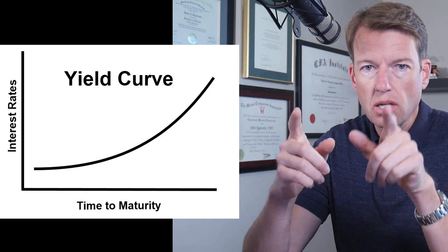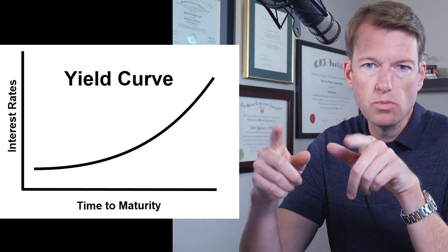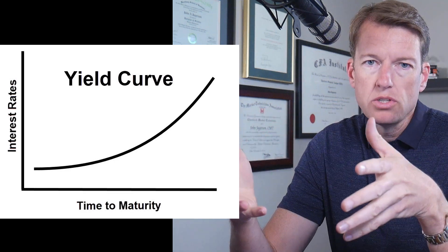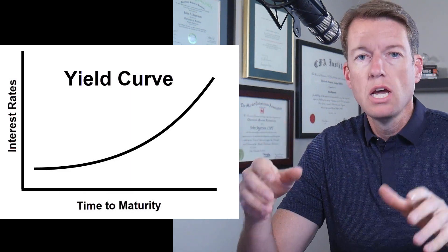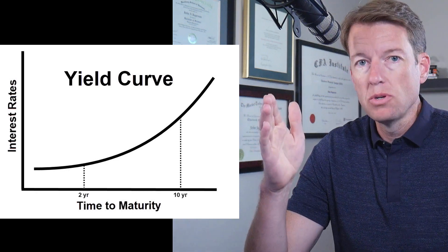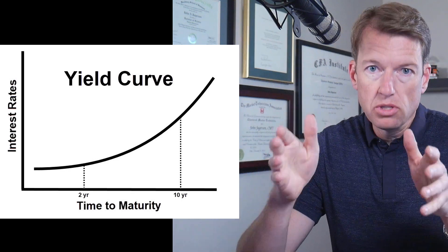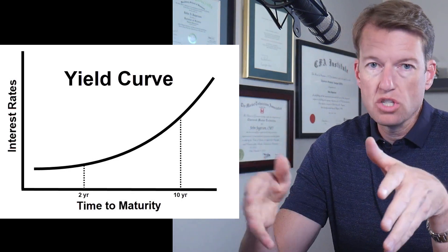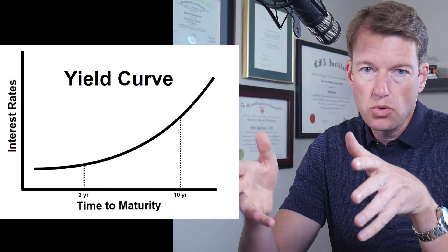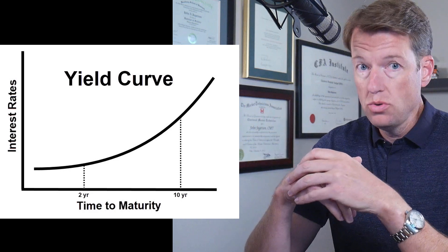Now investors will look at a couple of areas in the yield curve. There are all kinds of maturities used here, but probably the most popular pair is a short-term interest rate at two years to maturity and a longer-term interest rate at ten years to maturity. In a normal yield curve situation where investors are expecting growth, maybe some inflation, the interest rate on the 10-year is going to be higher than the interest rate on the 2-year bond.